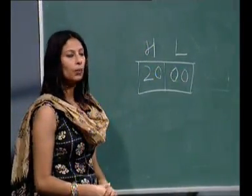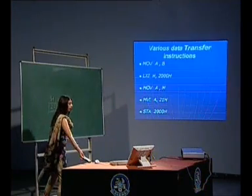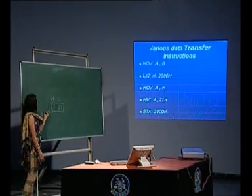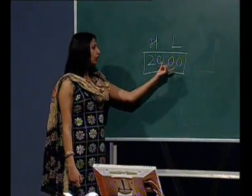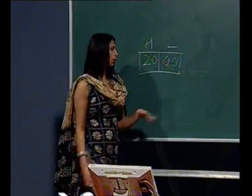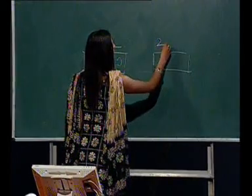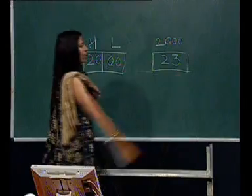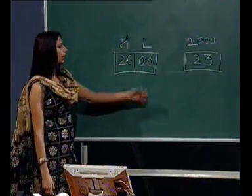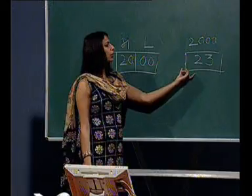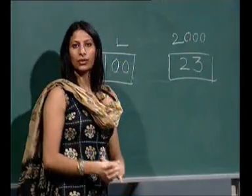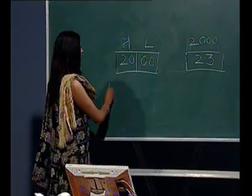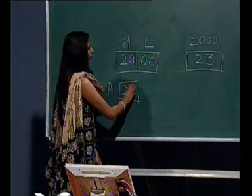The next instruction is MOV M,A. In this case, the microprocessor will first read the HL pair. The contents in the HL pair are 2000, so it will go to memory location 2000. If the contents in memory location 2000 is 23, these contents are transferred to register A after the execution of this instruction. So after execution, the contents of register A will be 23.